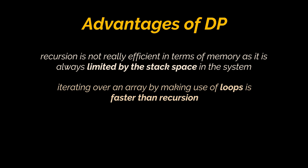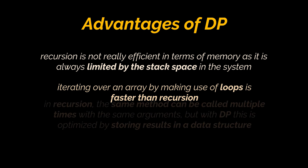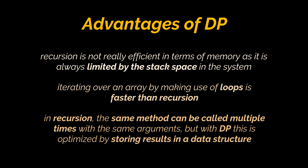Because every time a method is called, there is an overhead of allocating space for that method and all its data in the call stack. This causes a slight delay in recursive methods when compared to iteration. In recursion, the same method can be called multiple times with the same arguments — in other words, the same result is calculated multiple times instead of just once.